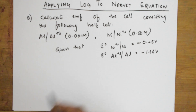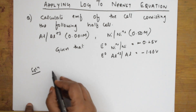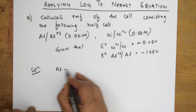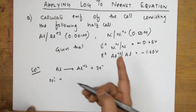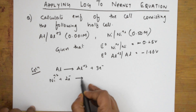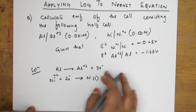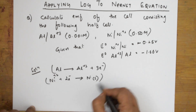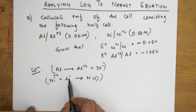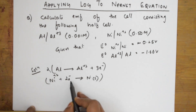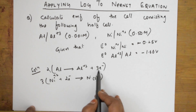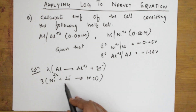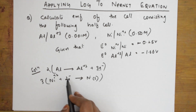First, we need to write the cell reaction. Aluminium gets converted to Al³⁺ plus 3 electrons. For nickel, Ni²⁺ picks up 2 electrons to form nickel solid. The electrons are not balanced, so to balance them on both sides, we multiply the aluminium half-reaction by 2 and the nickel half-reaction by 3. This way, 3 electrons times 2 gives 6 and 2 electrons times 3 also gives 6, so electrons cancel on both sides.